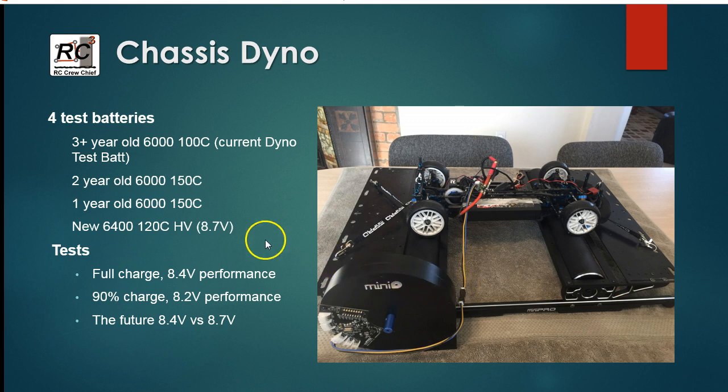We're going to look at four different batteries. I've got an old, approximately three-year-old 6000 100C battery that I currently use as my dyno test battery. Now you might say why would you use such an old battery for doing your dyno testing? Well, it's basically because everything's relative. I'm charging the battery to the same state, doing as much as I can to get everything as repeatable as possible, so the battery that you use is sort of irrelevant as long as it's charged to the same state and you do everything repeatedly because you're just doing relative comparisons.